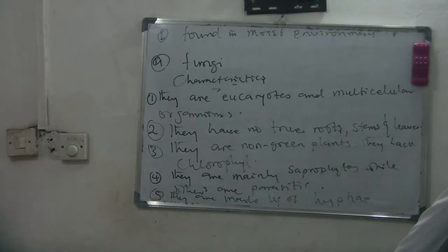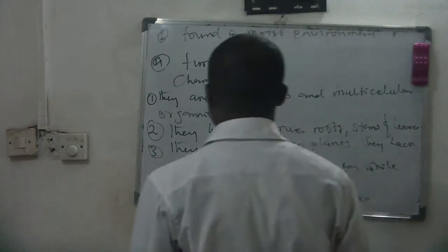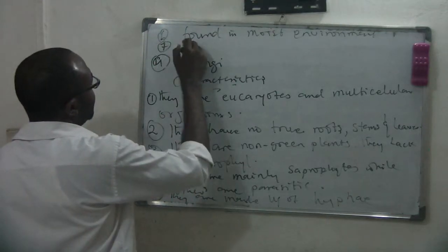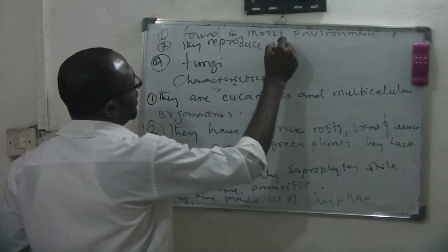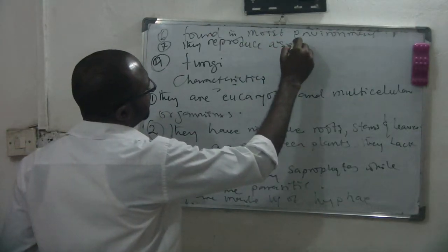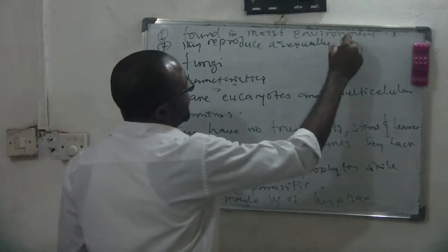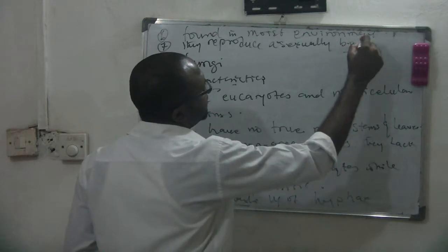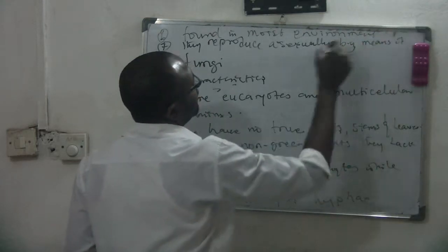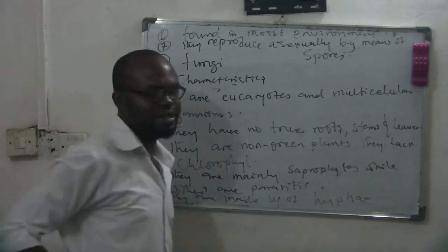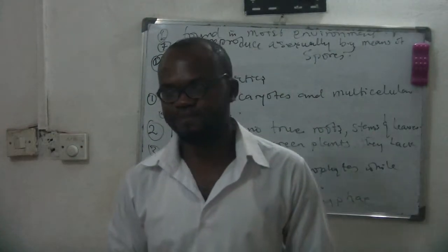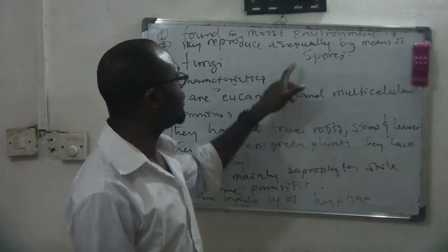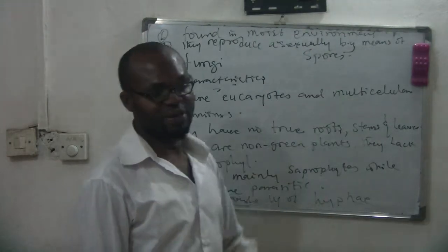They reproduce asexually by means of spores. That is their reproduction mechanism — they use asexual reproduction through the use of spores.